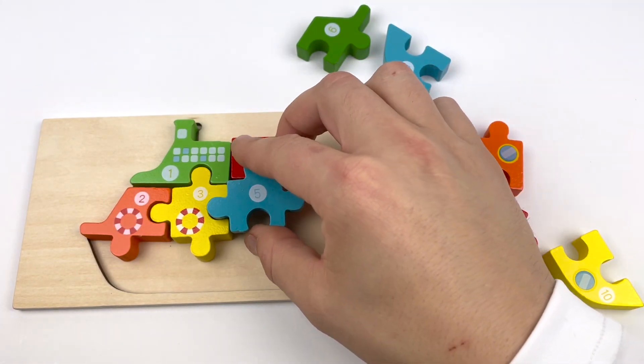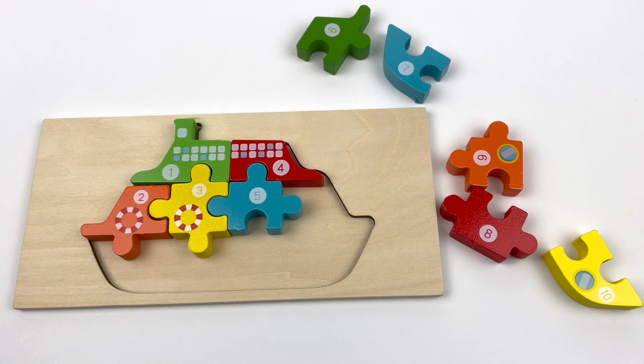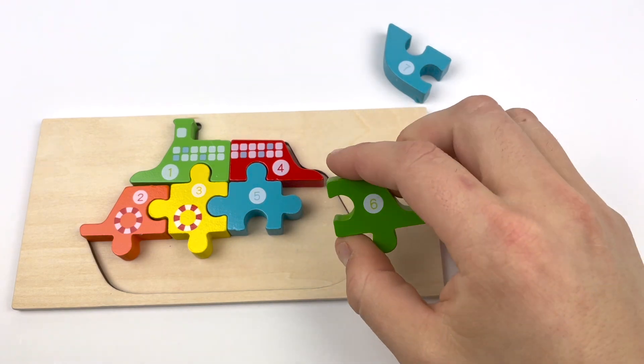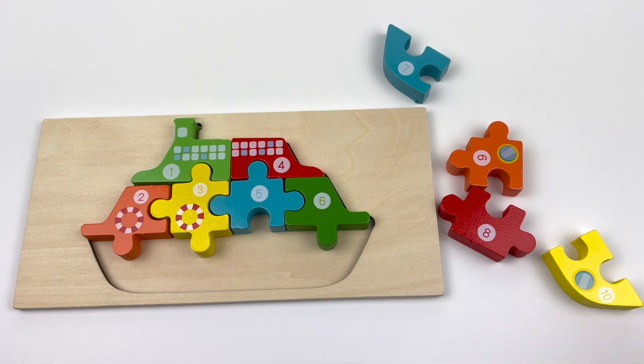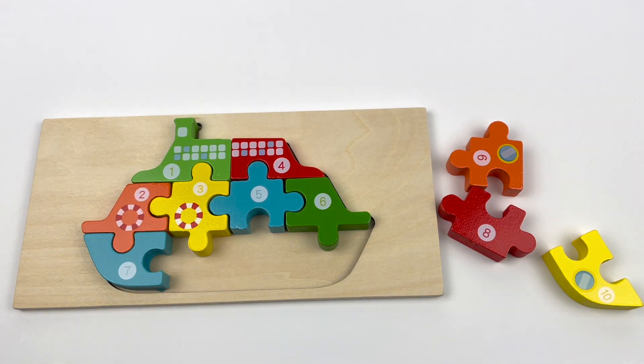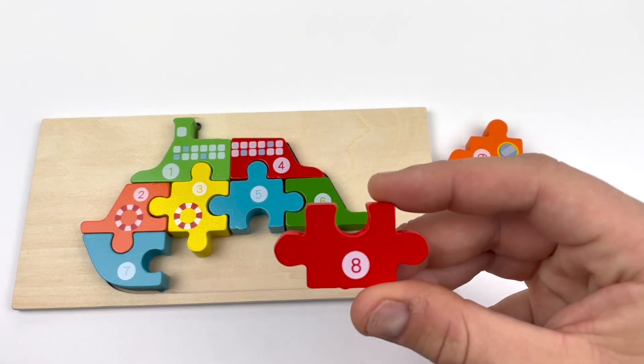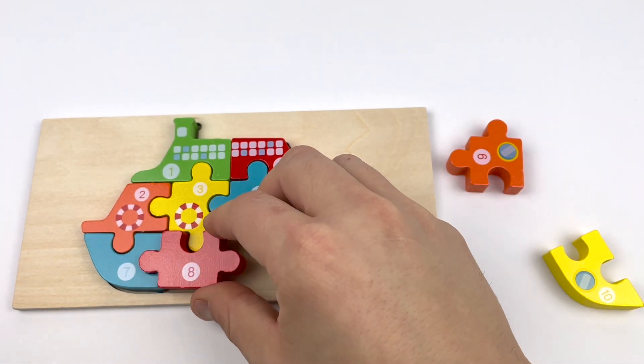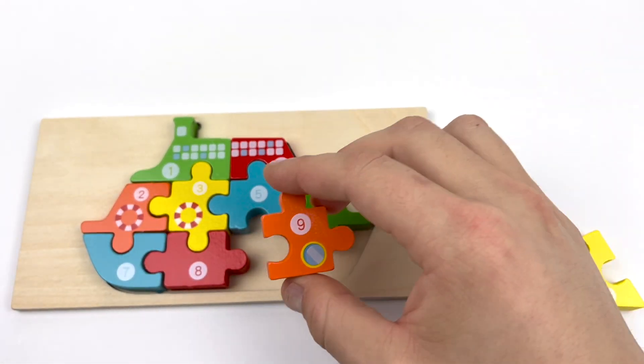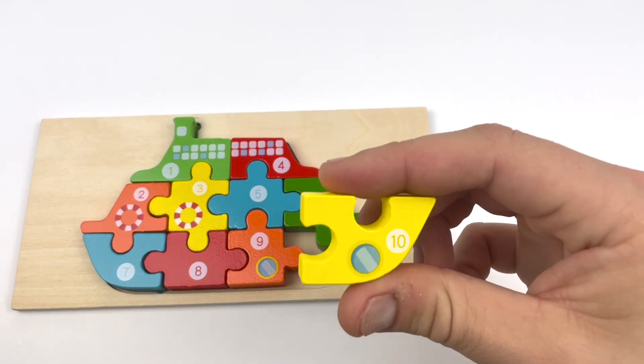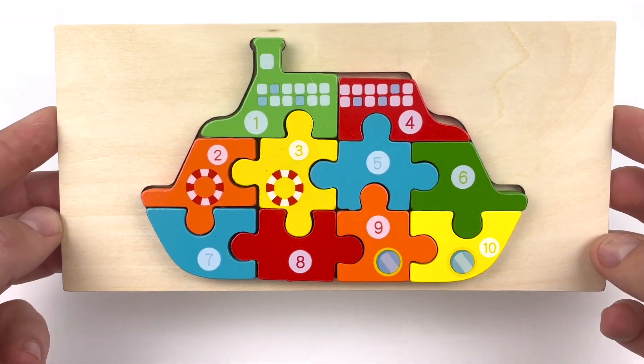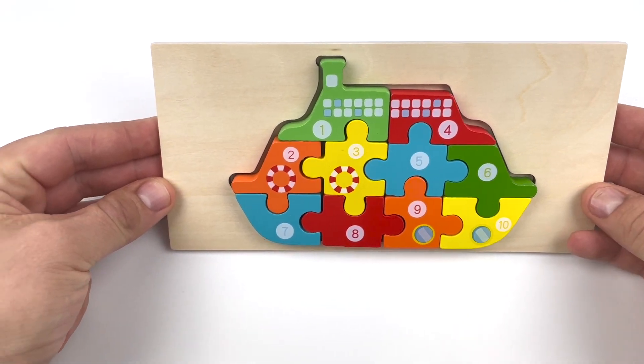Number five, blue. Number six, green. What goes next? That's right. Number seven, blue. Number eight, red. Number nine, orange. And our last piece. Ten, yellow. Wow. Do you know what this is? You're right. That's a boat.